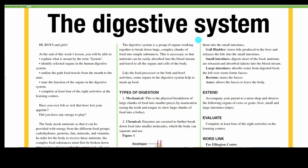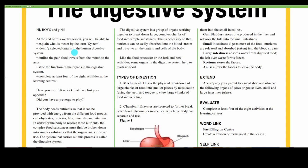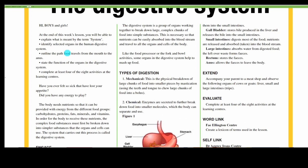In this episode, we look at the digestive system. At the end of this lesson, you will be able to explain what is meant by the term system, identify selected organs in the human digestive system, outline the path food travels from the mouth to the anus, state the function of the organs in the digestive system, and complete at least four of the eight activities at the learning centers.